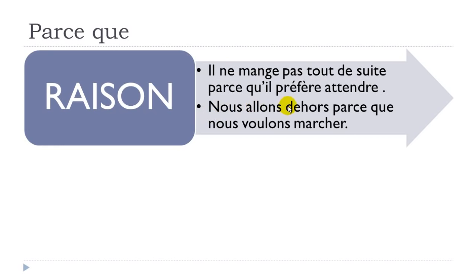Second example: 'nous allons dehors' — 'aller' is to go, 'dehors' means outside, so we go outside. 'Parce que nous voulons marcher' — 'vouloir' means to want, 'marcher' means to walk, we want to walk. So: 'nous allons dehors parce que nous voulons marcher.'